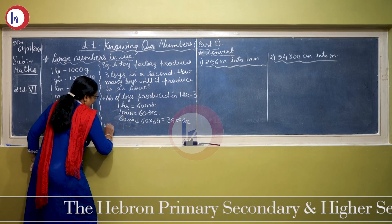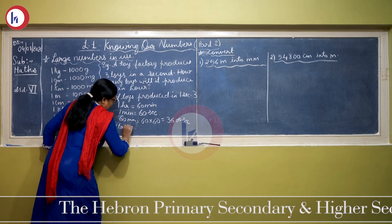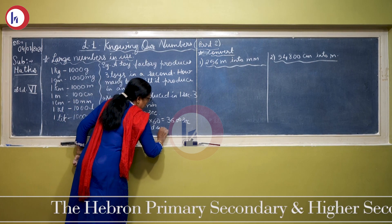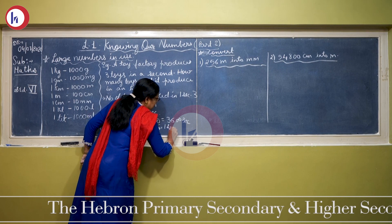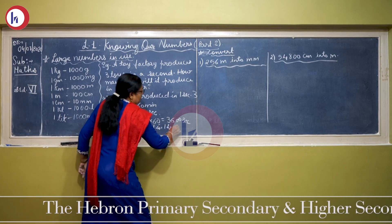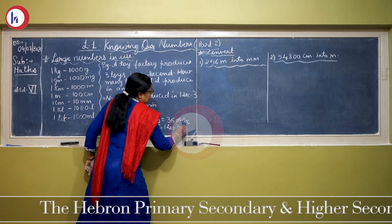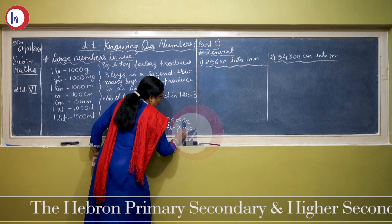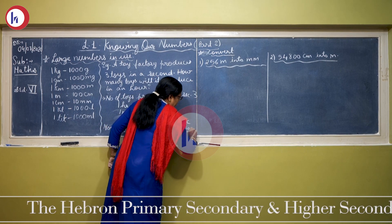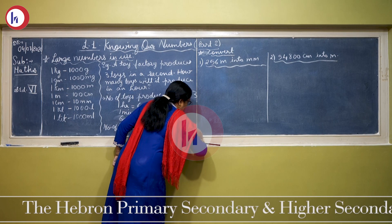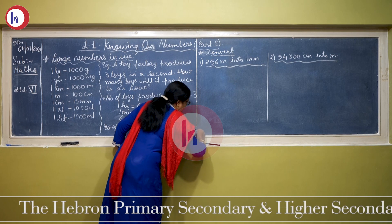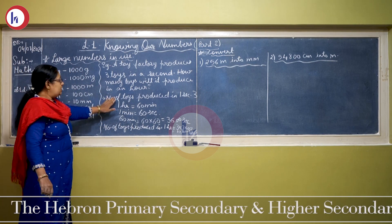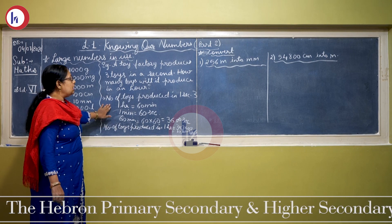So number of toys produced in 1 hour is equal to: how many toys are produced? 3 — multiplied by the number of seconds, that is 3600. So it is equal to 10,800 toys. I think everybody must have understood how to do the solution of this word problem.